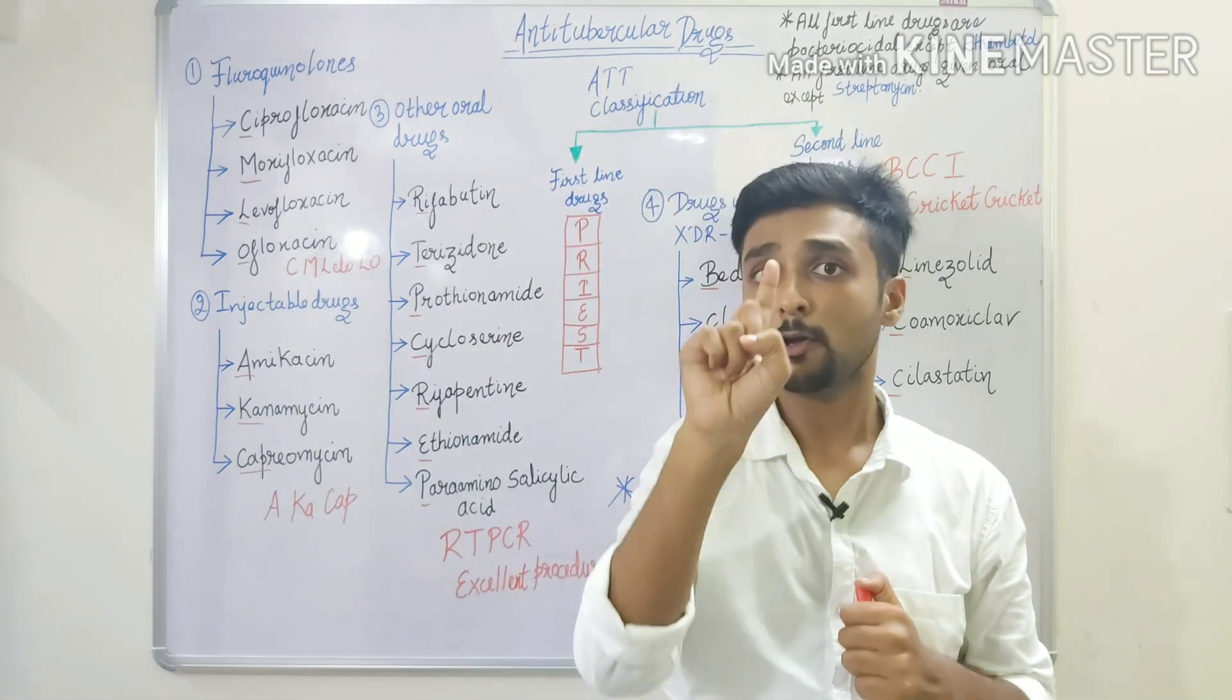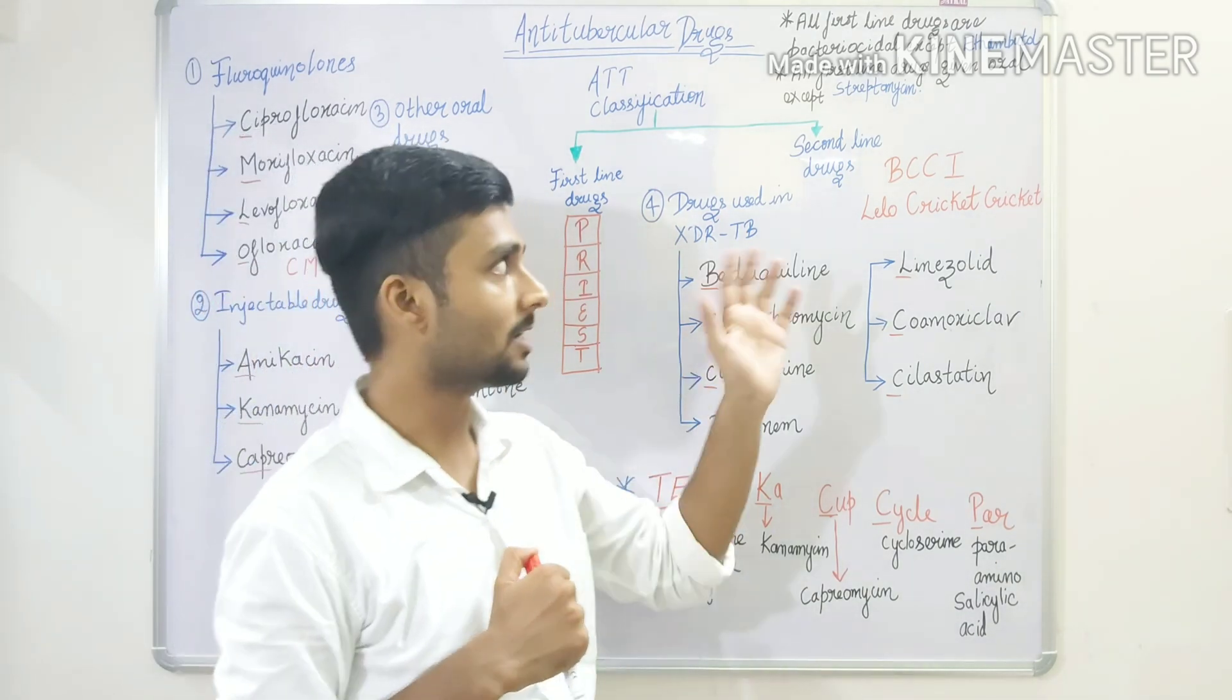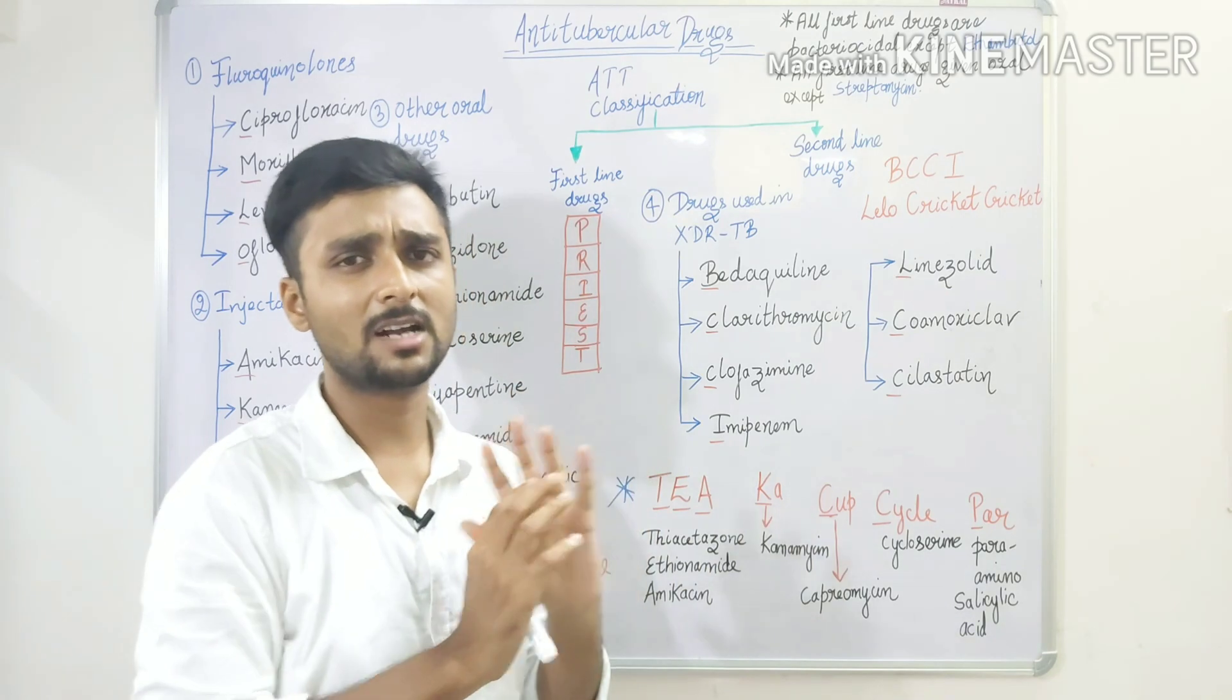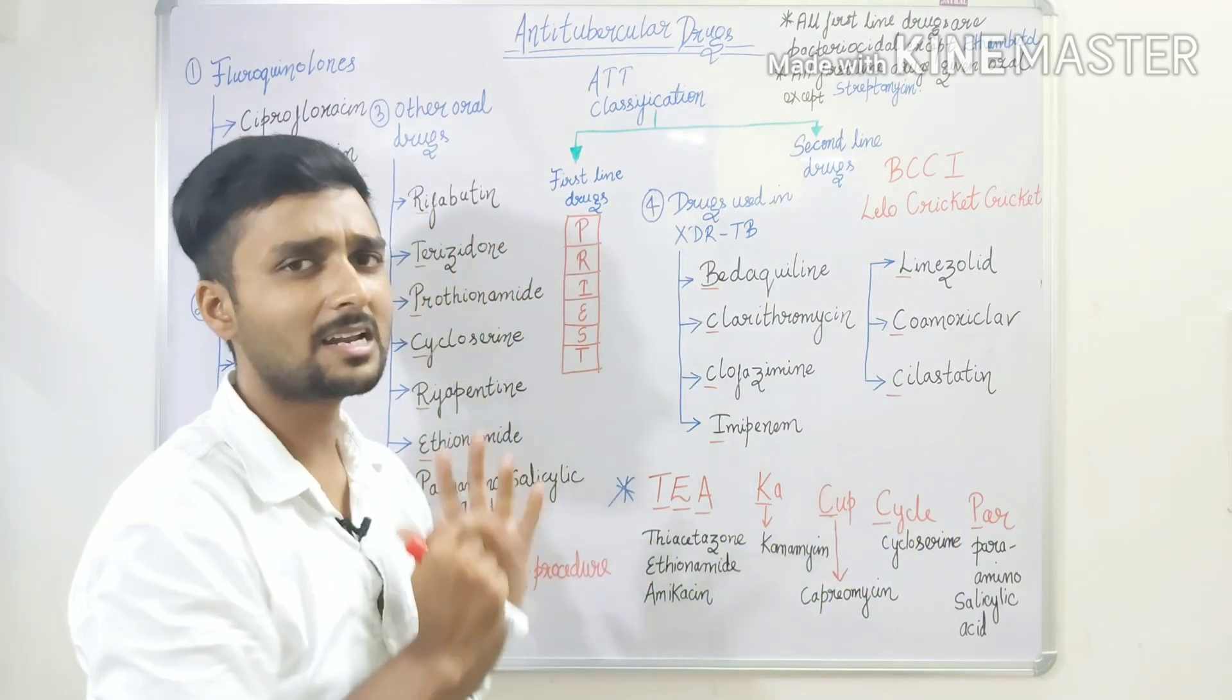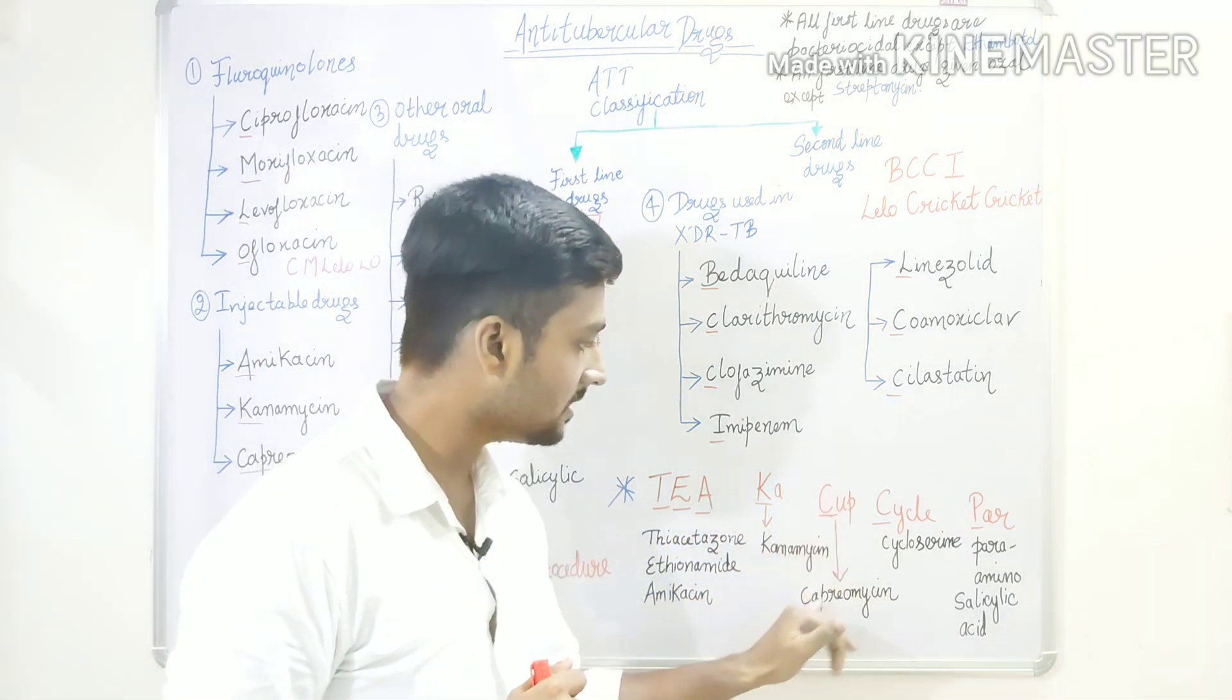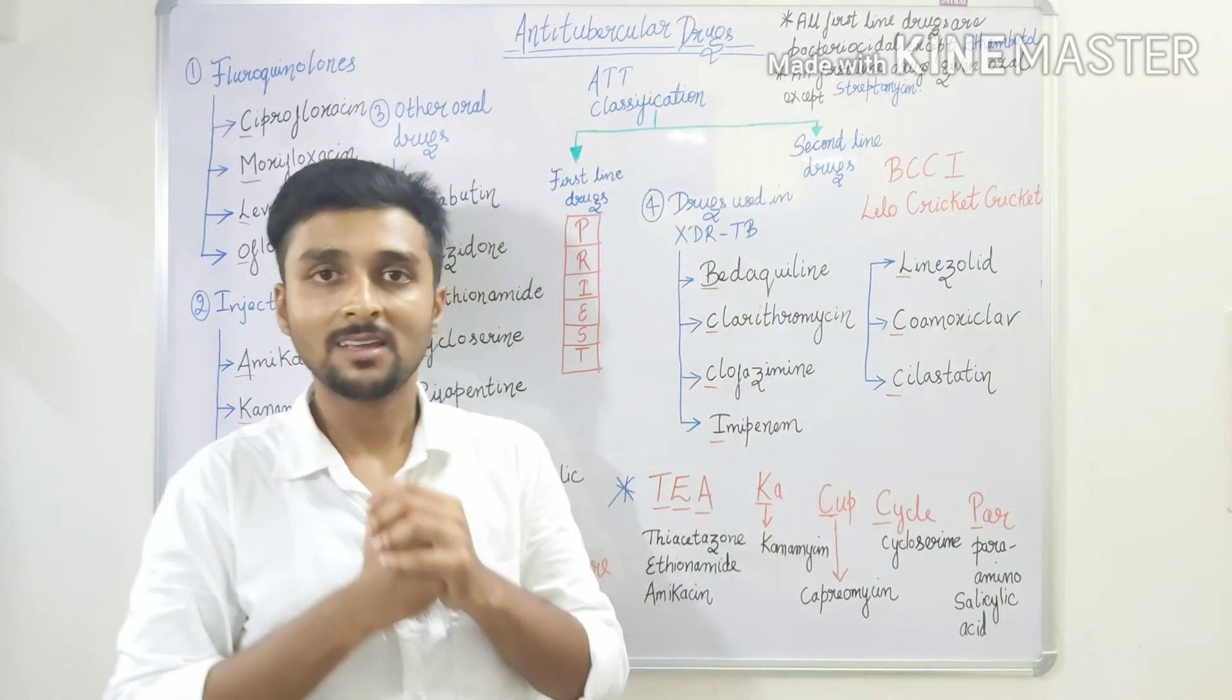So, 4 classes to remember. First is fluoroquinolones, we wrote MOLO. Then injectable drugs, we wrote AKC. Third, other oral drugs, we wrote RT-PCR excellent procedure. And last, drugs used in multiple drug-resistant TB, BCCI Lelo Cricket. Now if there is any confusion in remembering all these, we can remember all drugs mixed in one line for second-line drugs. We made a simple one: T ka cup cycle par. This includes almost all class drugs. T for Thiacetazone, E for Ethionamide, A for Amikacin, K for Kanamycin, cup C is Capreomycin, cycle C is Cycloserine, and par is Para-aminosalicylic acid. So in this way we can simply remember our first-line drugs and second-line drugs.